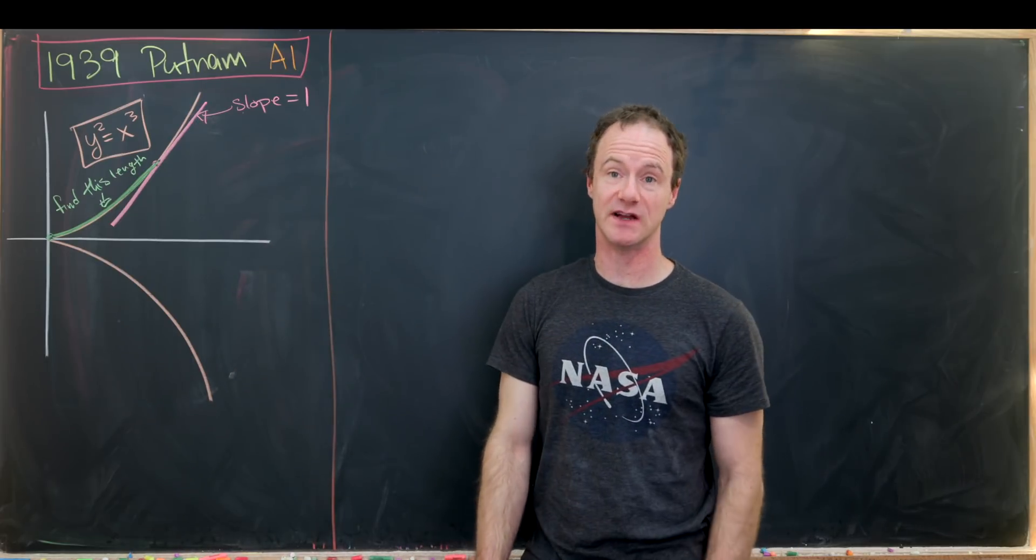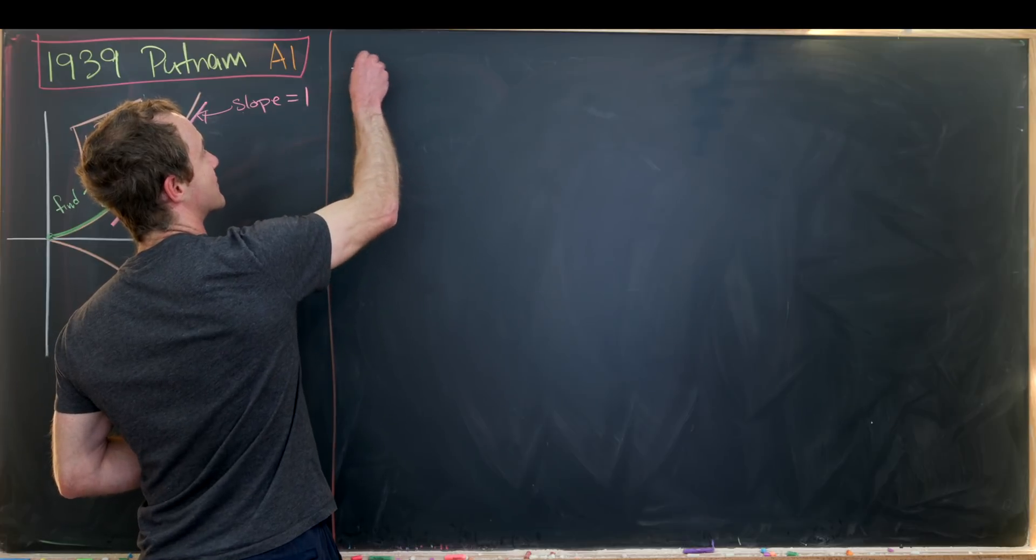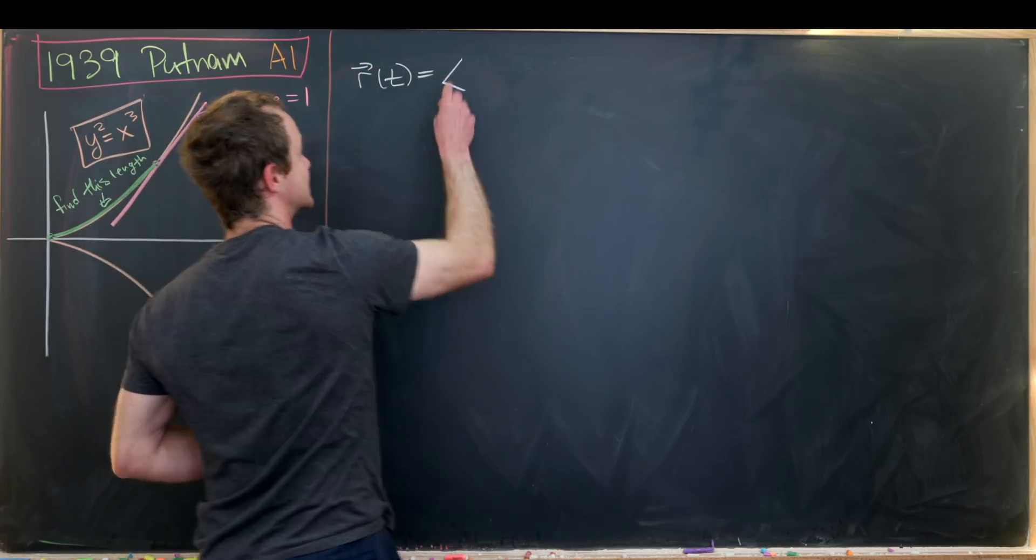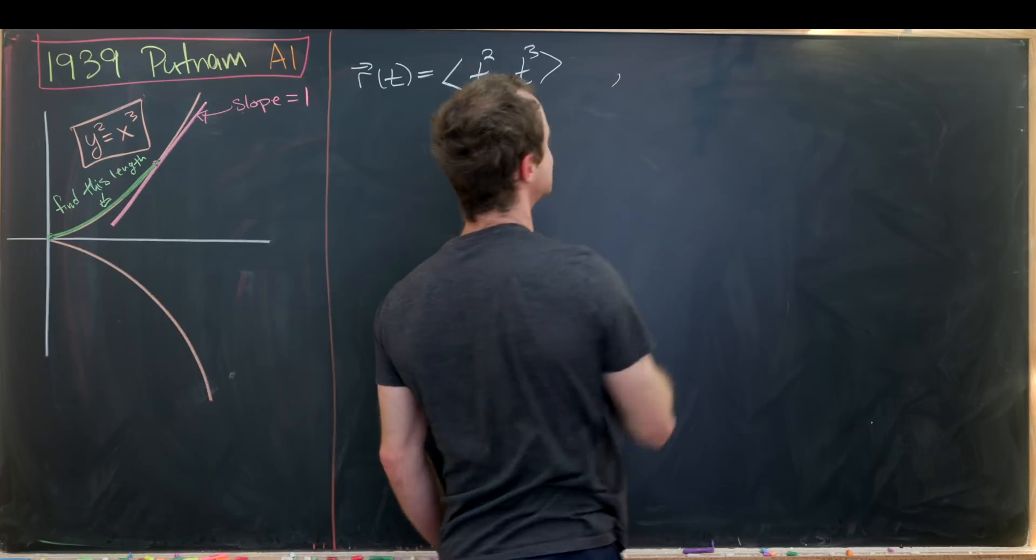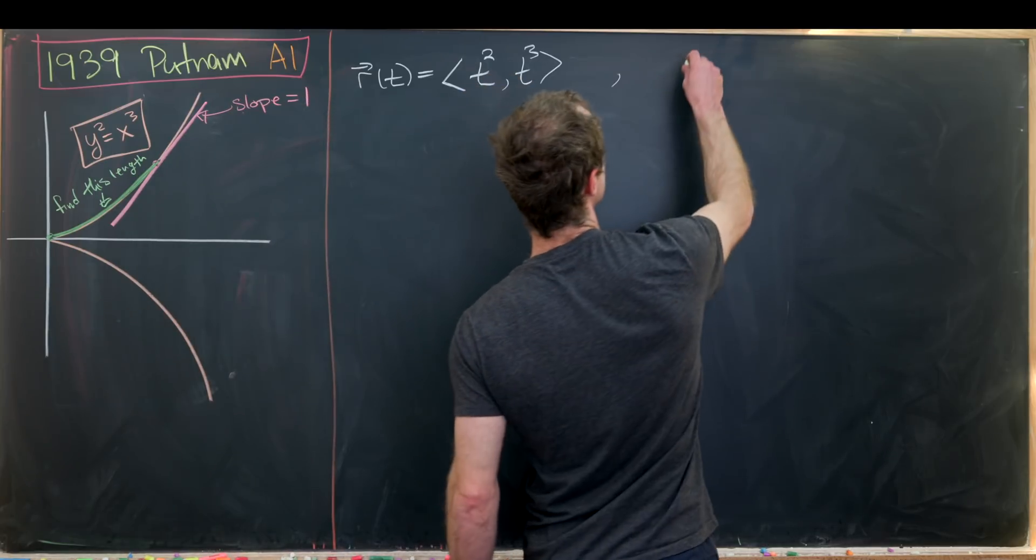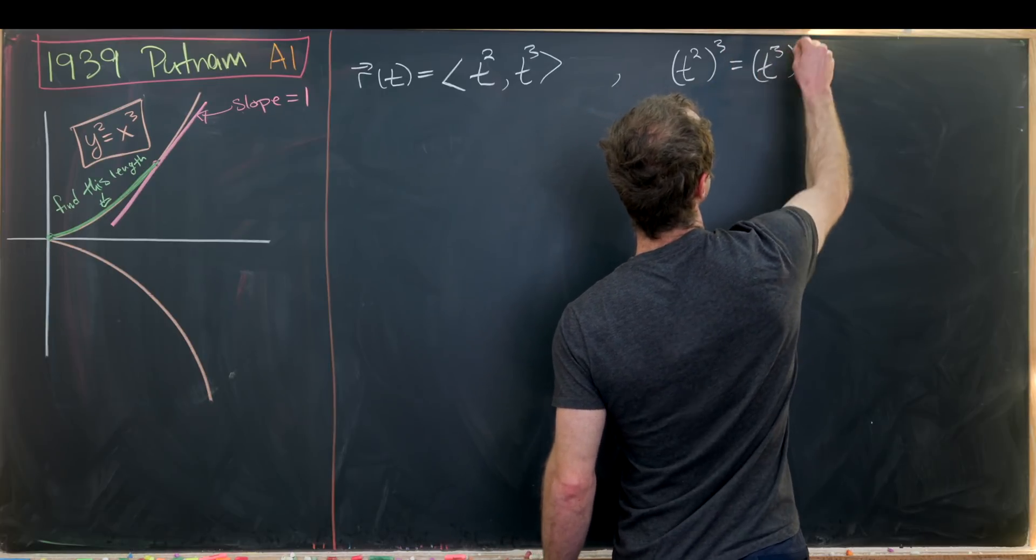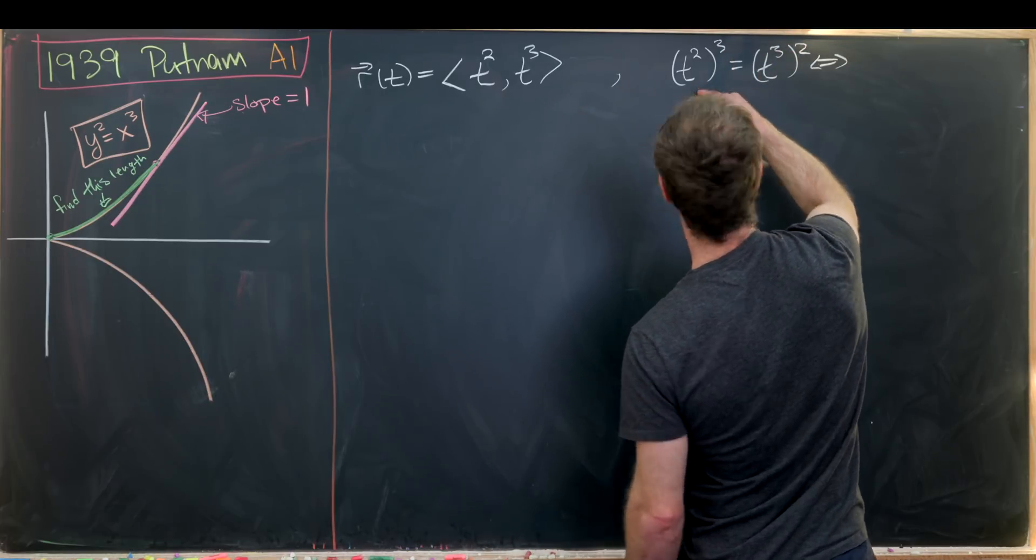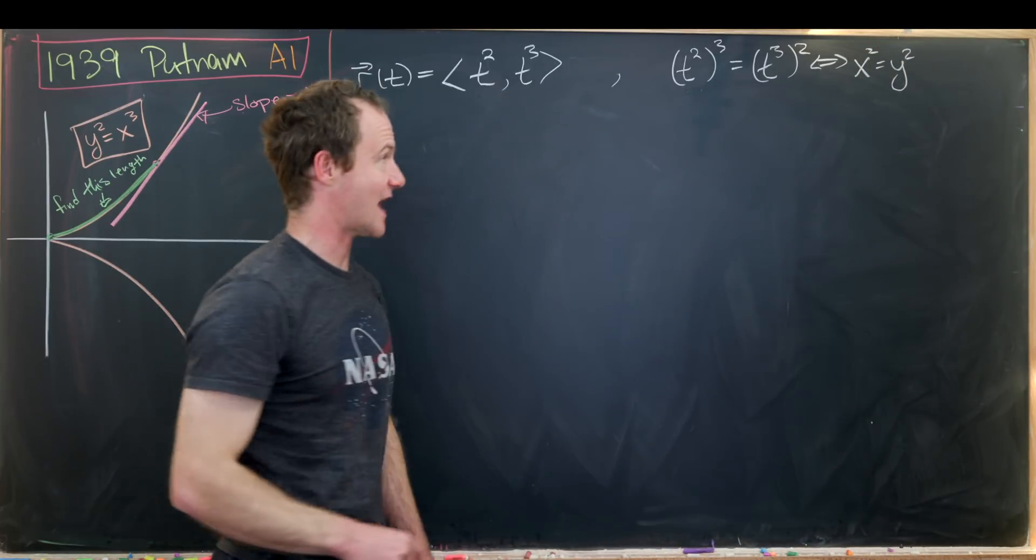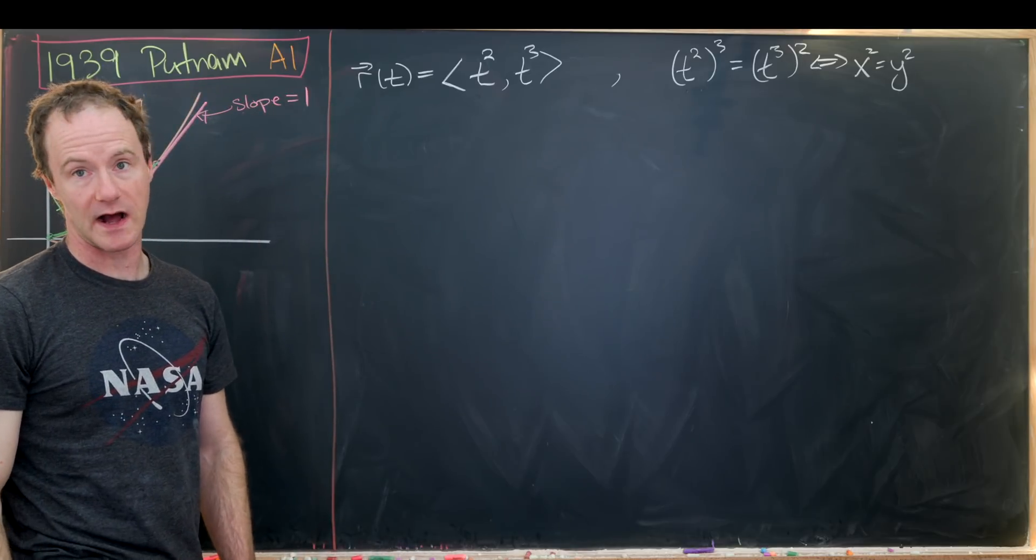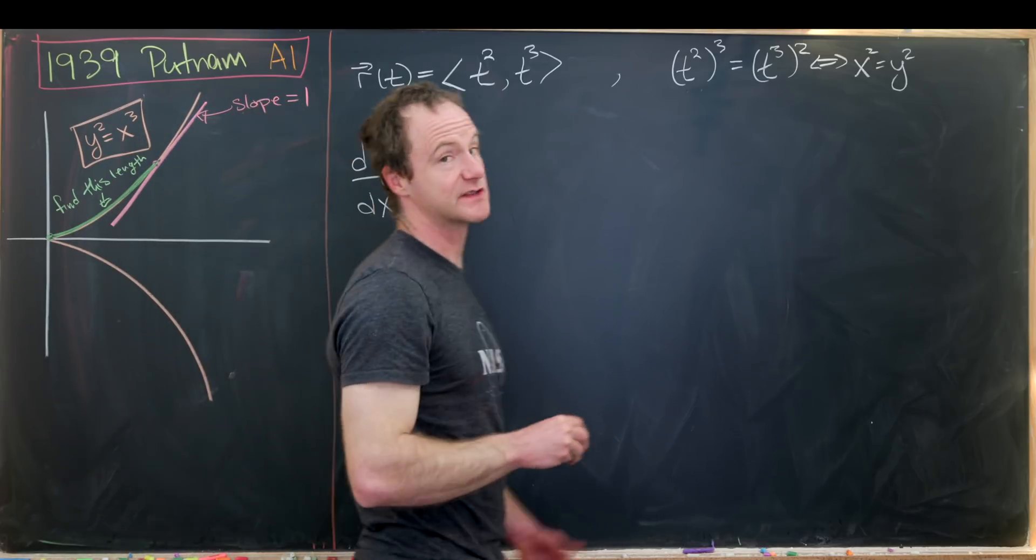I'll start by parametrizing this curve. Let's consider the parametrization r(t) which has vector parts t squared and t cubed. This clearly parametrizes the curve because t squared cubed is equal to t cubed squared, which is exactly the same thing as x cubed equals y squared, because this first entry is playing the role of x.